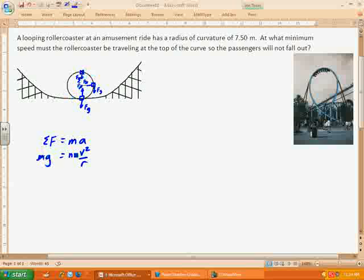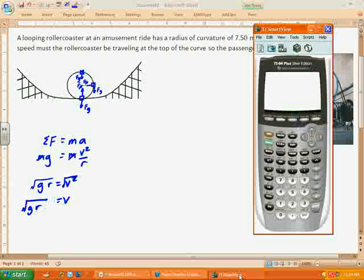So from there, we can cancel out the masses. We can multiply by r, so we have g times r equals v squared. Then we can take the square root of each side, which will get rid of the squared. So my velocity is going to be equal to the square root of gravity times the radius. So let's go ahead and do that.